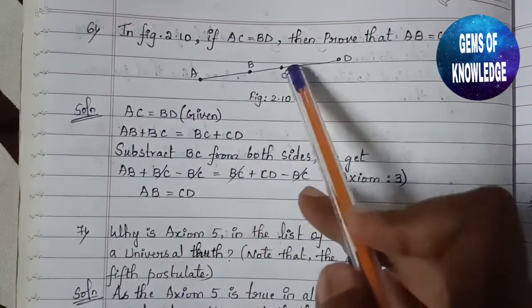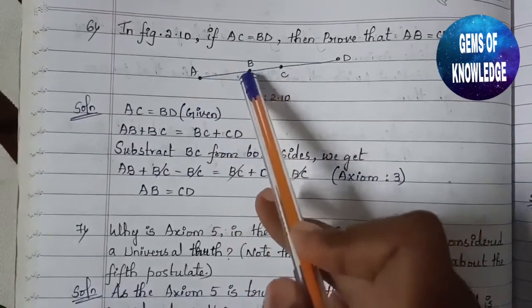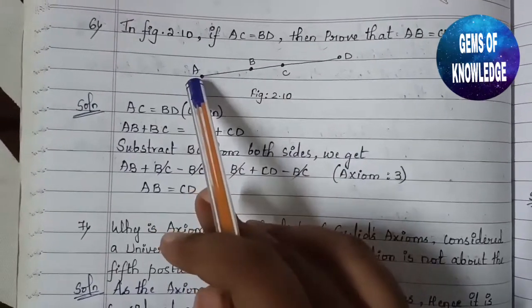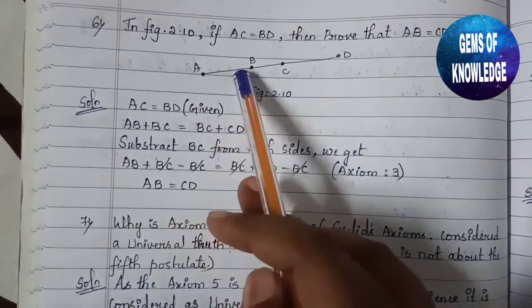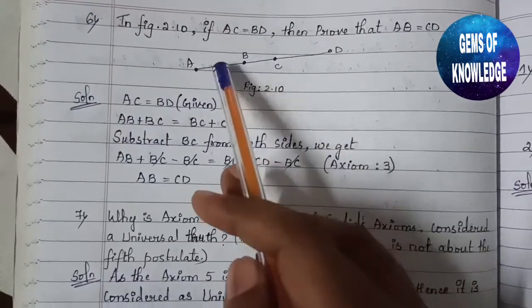If AC equals BD, then you have to prove that AB equals CD. Excluding this part, you have to prove this part equals this part.